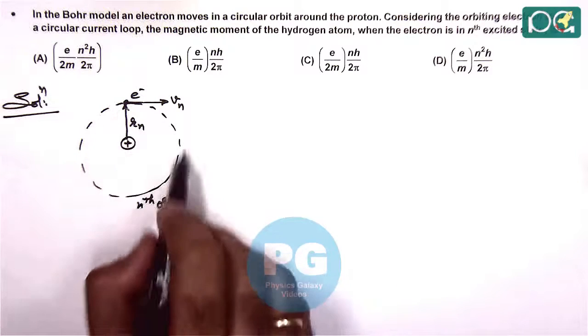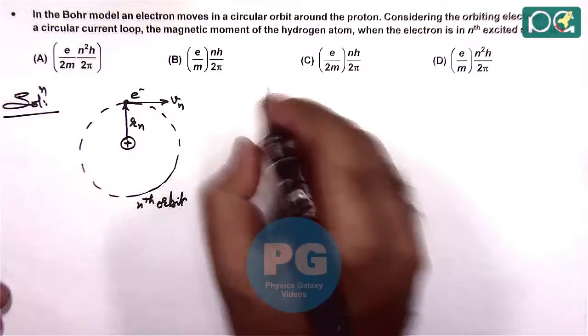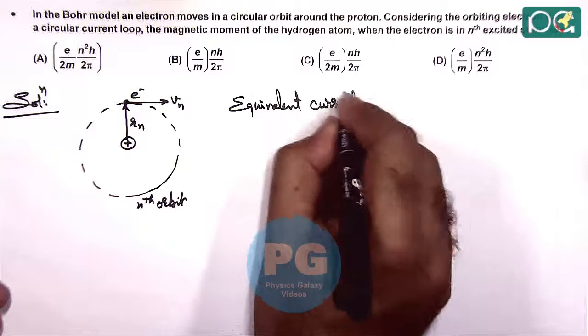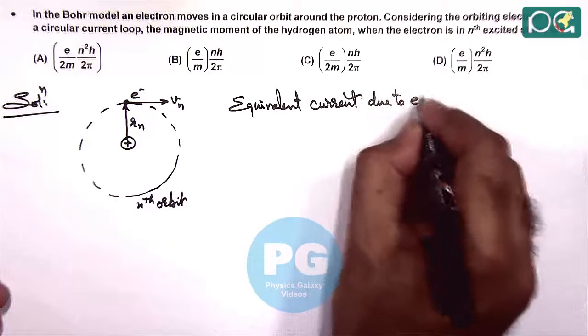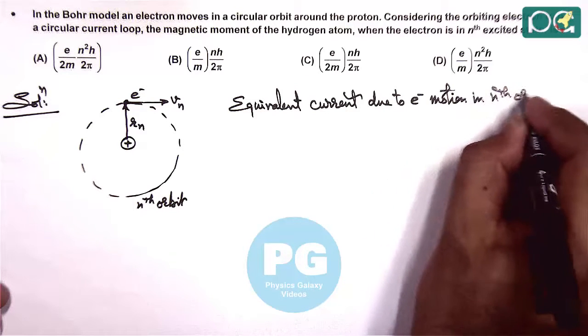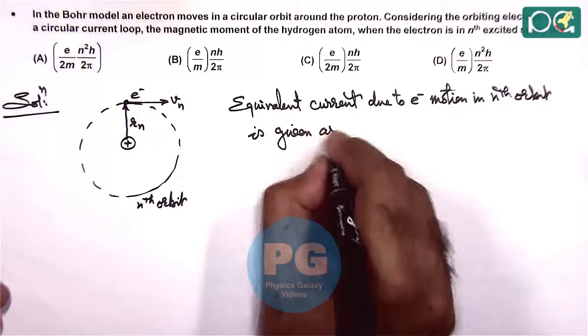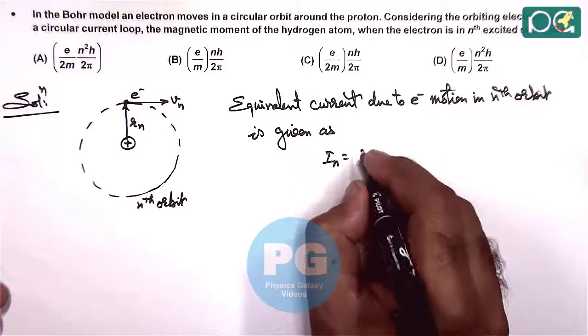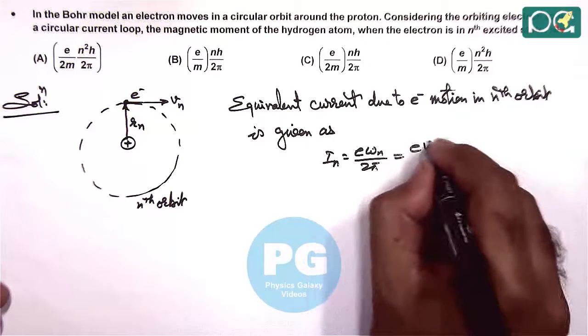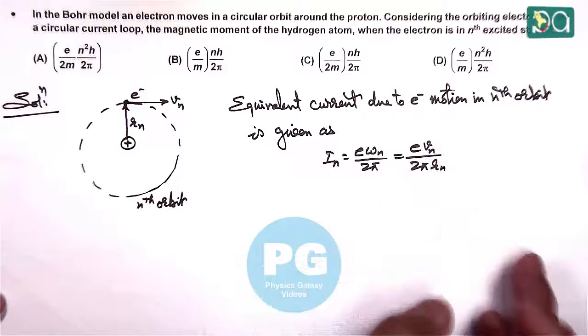Then here the electron revolution can be considered as an equivalent current and we can write the equivalent current due to electron motion in nth orbit is given as current in nth orbit as e omega n by 2π, q omega by 2π, which can be written as e vn by 2π rn. As the values of vn and rn we know we will substitute later.